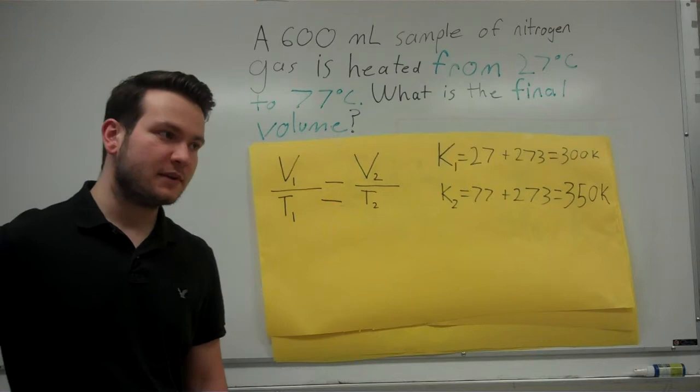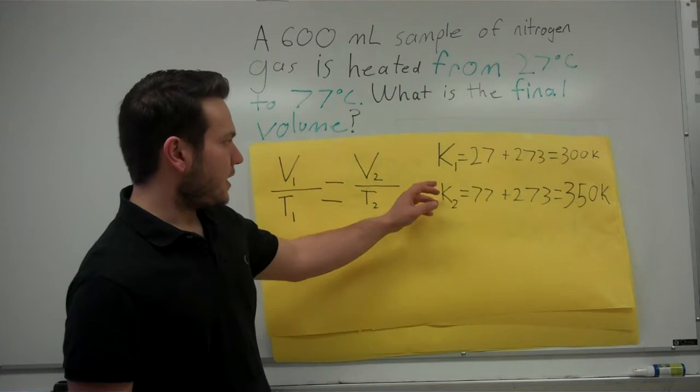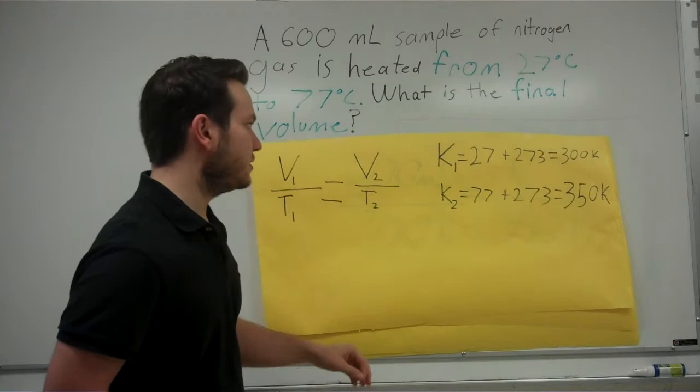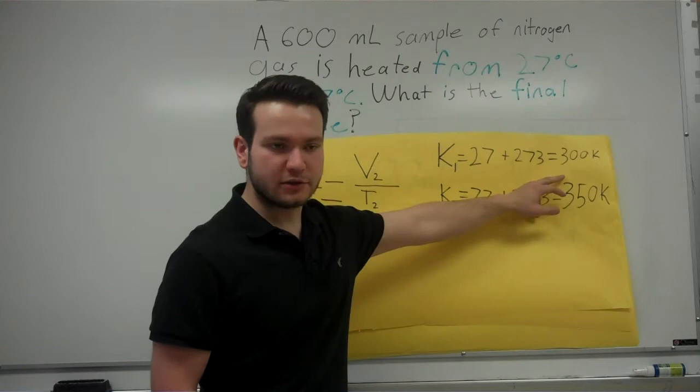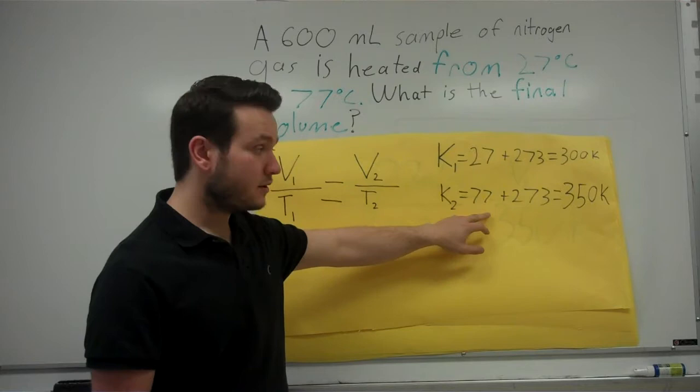So, the first step is to write down your equation and to convert your temperatures from degrees Celsius to degrees Kelvin. So, if you add 273 to 27, you get 300 degrees Kelvin. If you add 273 to 77, then you get 350 degrees Kelvin.